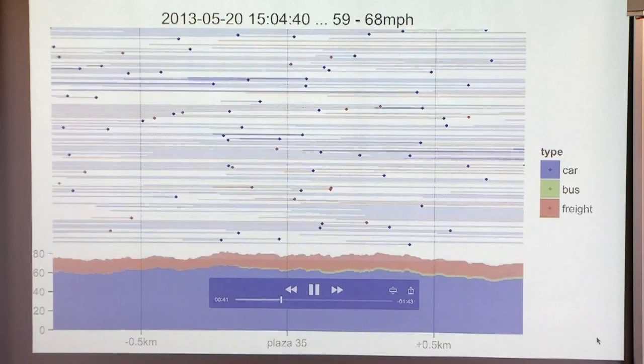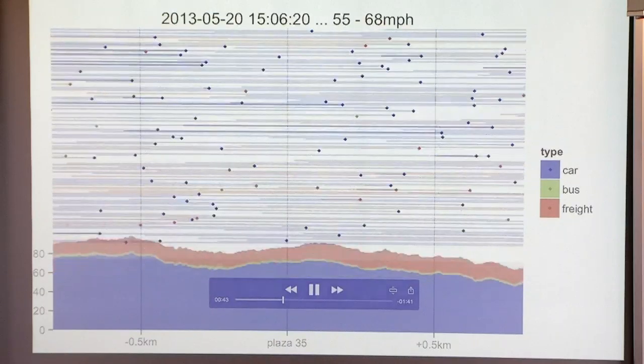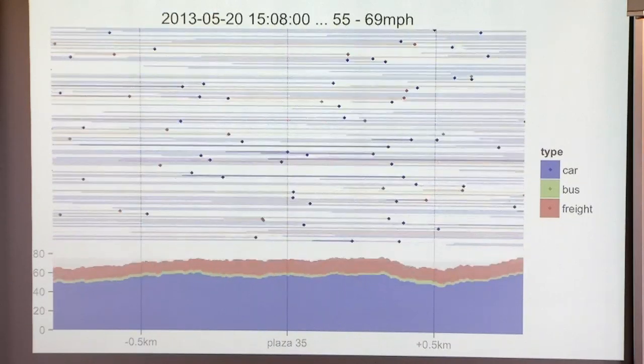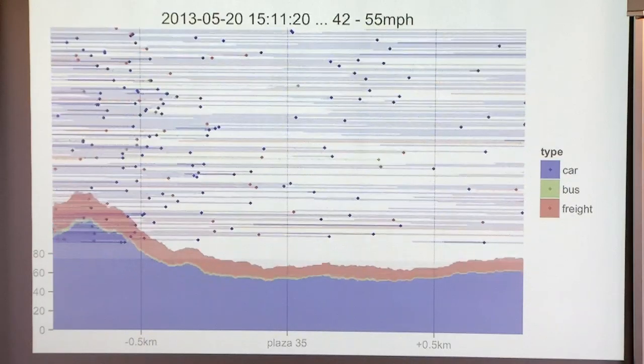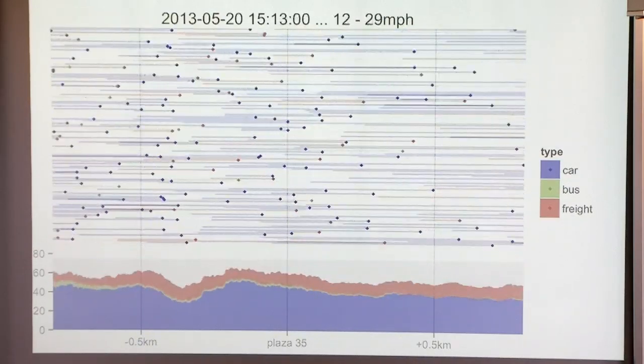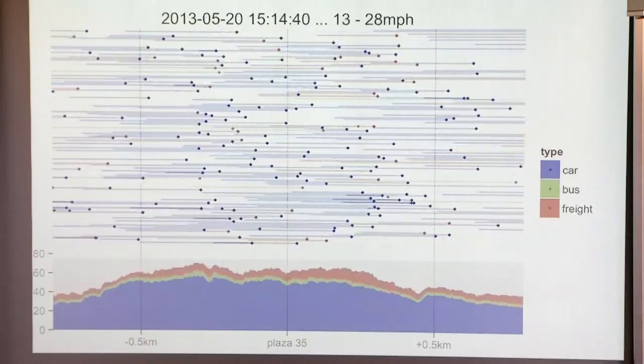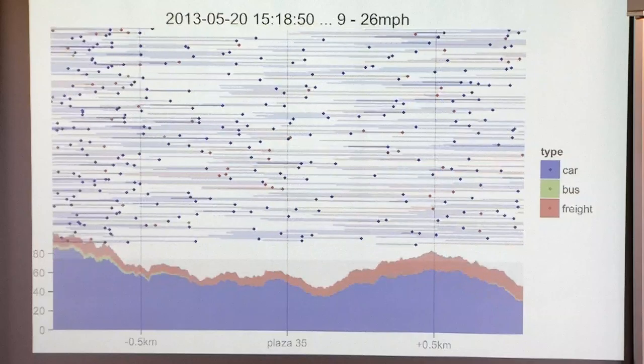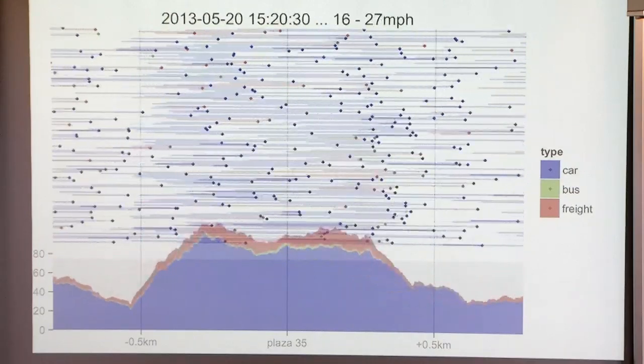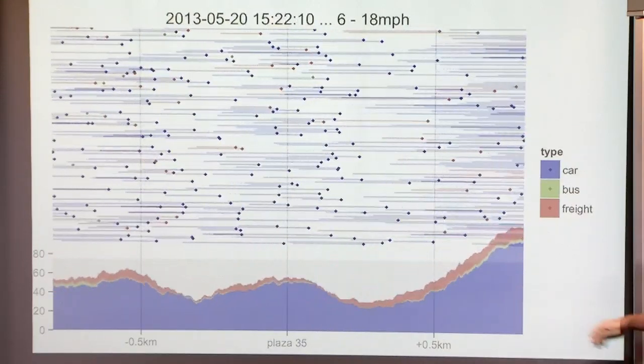Happy, happy, happy. 60 miles an hour. How many lanes? I don't know. I think it's four lanes. Now this is what the onset of congestion looks like. Speed drops to 20 miles an hour. That's what congestion looks like.